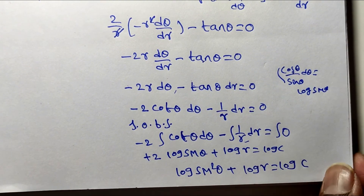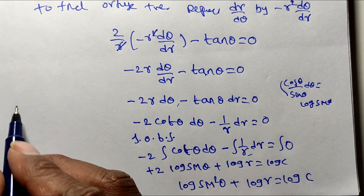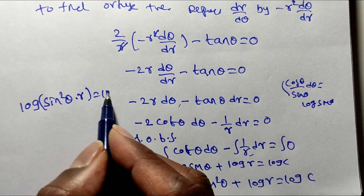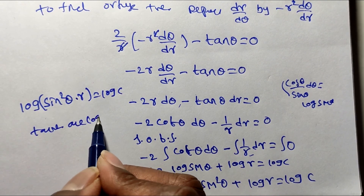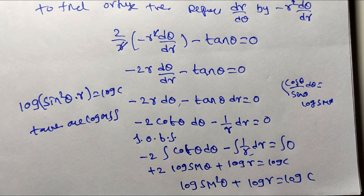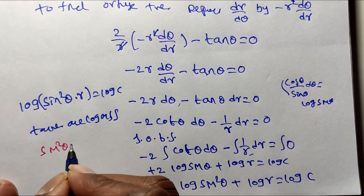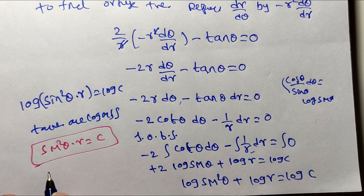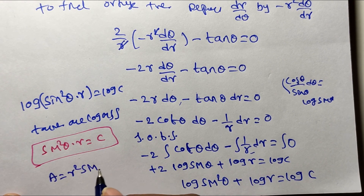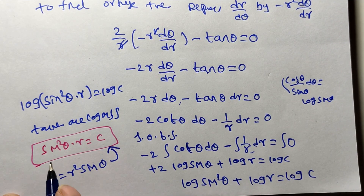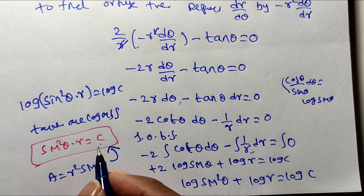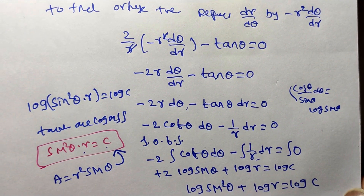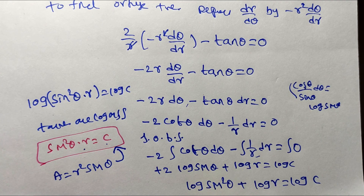Using log a + log b = log(ab): log(r · sin²θ) = log c. Taking antilog on both sides: r · sin²θ = c, where c is an arbitrary constant. Therefore, for the given curve a = r² cos θ, the required orthogonal trajectory is r · sin²θ = c. We will solve similar problems in the next video — thank you for watching.